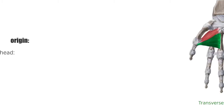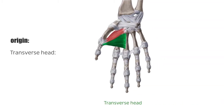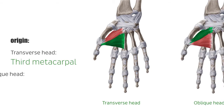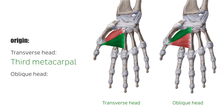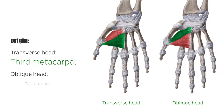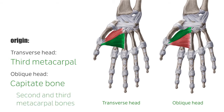The adductor pollicis muscle has two origin surfaces. The transverse head originates from the palmar base of the third metacarpal bone. The oblique head arises from the capitate bone and the palmar bases of the second and third metacarpal bones.